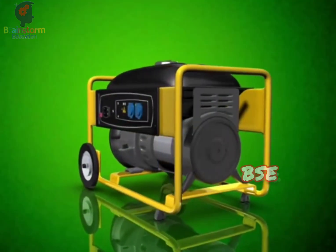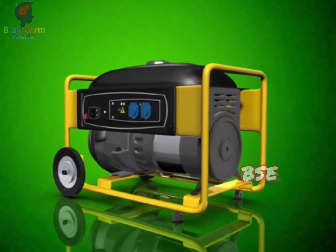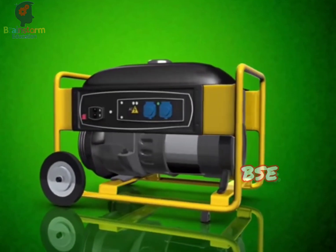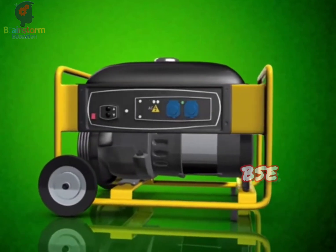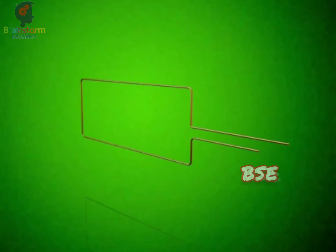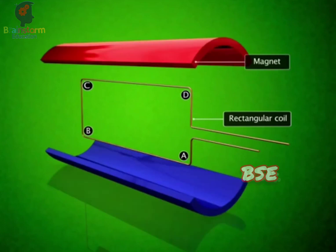Electric generator works on the principle of inducing an electric current by rotating a coil in a magnetic field. A rotating rectangular coil ABCD is placed between the two poles of a permanent magnet.